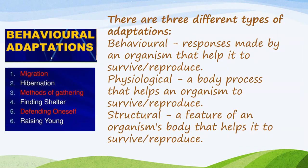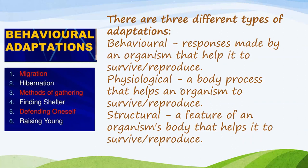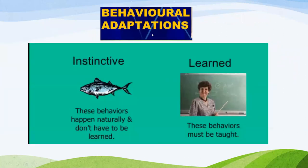Now, behavioral adaptation. There are these types of behavioral adaptation: migration, hibernation, method of gathering food, finding shelter, and so on. Some books also mention physiological adaptation — a body process that helps an organism to survive and reproduce — mentioned separately. Behavioral adaptation can also be classified into two types: instinctive and learned. Learned is when we learn how to survive in the best possible way, and instinctive comes from within naturally and does not have to be learned.